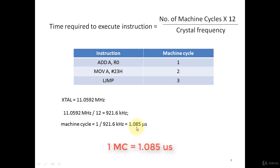Here, you make a note that one machine cycle equals to 1.085 microsecond.